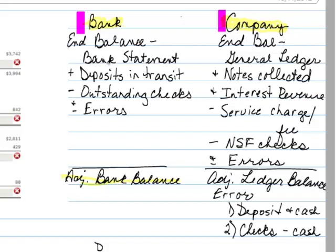The same with our outstanding checks. Those checks will clear the bank and as a result cause a reduction to our cash as shown on that bank statement. We simply need to identify that the bank balance does not have those included, but it should. We can also have errors that are either a plus or a minus on that bank total, ultimately getting an adjusted bank balance.